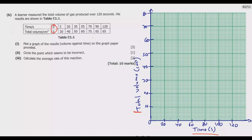Starting to plot: point (0, 0) is at the origin. Then (5, 20) — since the axis jumps by 20 with 10 subunits, each subunit is 2 seconds, so 5 is 2.5 subunits along. Point (20, 40) is straightforward. Point (35, 50) lies halfway between the 30 and 40 markings. Depending on the scale of your graph paper, use smaller intervals if needed.